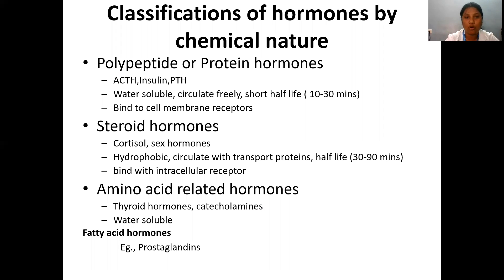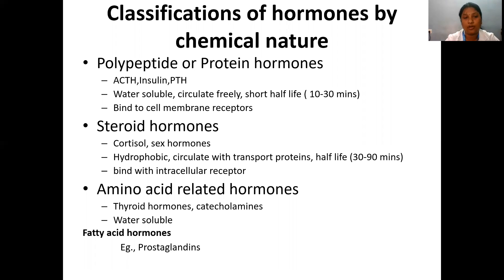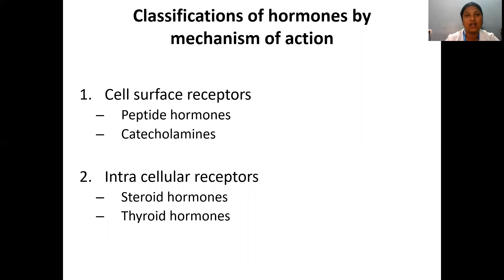The second category is steroid hormones — examples are cortisol and sex hormones. They are hydrophobic, that is lipid soluble, and circulate only after binding with transport proteins. Their half-life is 30 to 90 minutes, and they bind with intracellular receptors to bring about the desired effect. The third category is amino acid-related hormones, which includes thyroid hormones and catecholamines — again water-soluble. The fourth minor category is fatty acid hormones, which includes prostaglandins.